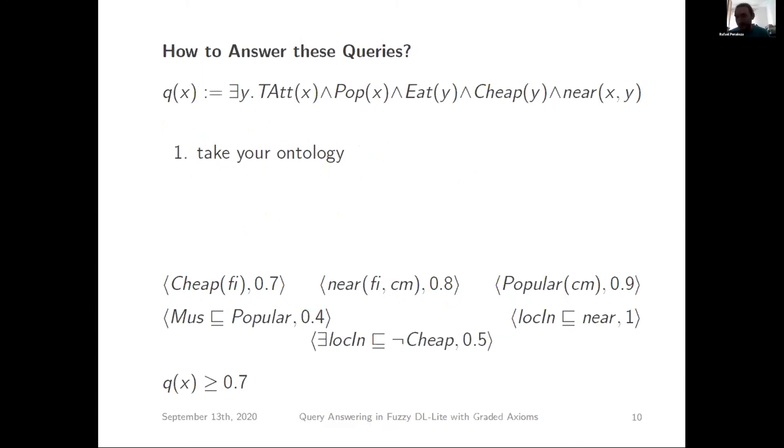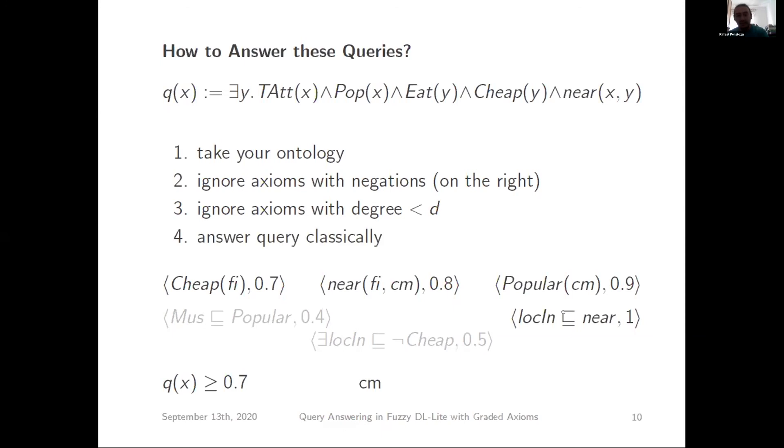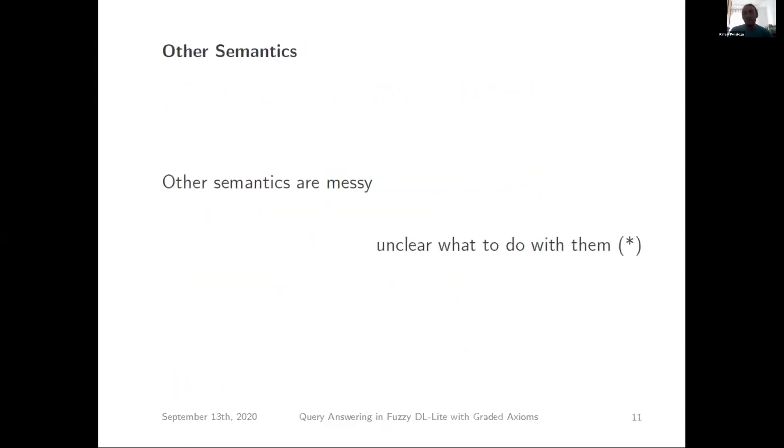So how do we answer these queries with Gödel semantics? This is my algorithm and it's very simple. I take my ontologies, the data and these axioms. First I ignore all the axioms that have negations on the right. In this case, I removed the last axiom from here. Say I wanted to answer this query with degree at least 0.7. Next I ignore all the axioms that have a degree less than 0.7, the d that I want. So here 0.4 is ignored, all the rest is there. Then I just answer my query classically. I reduce everything by removing some axioms from the ontology to a standard ontology-based query answering question. Then I can use all these super optimized systems. If my degree is 0.4, I can remove this. But if my degree is 0.8, I remove more.